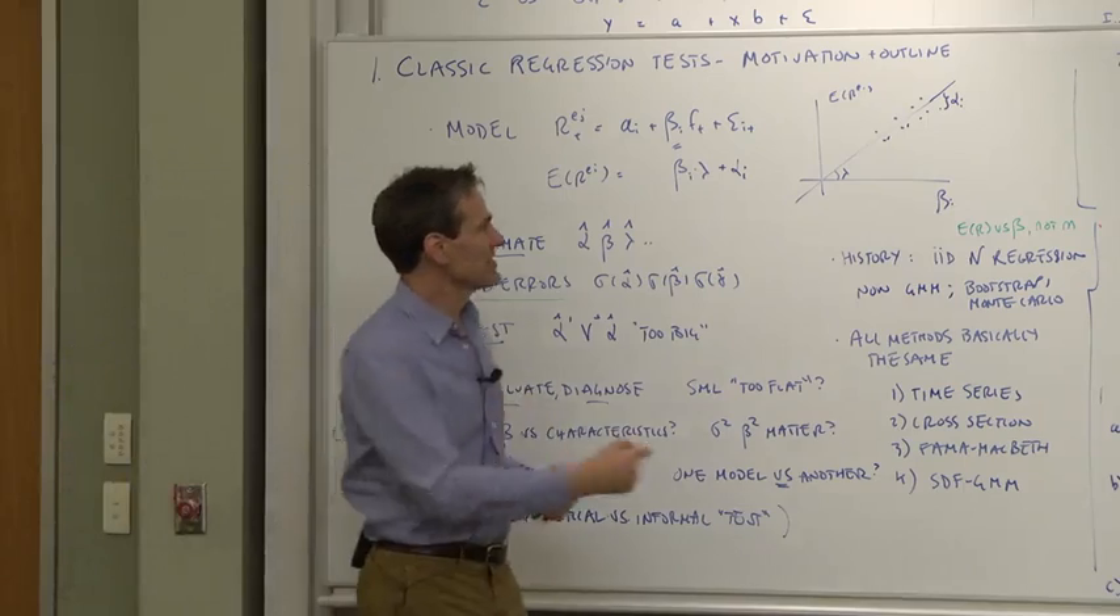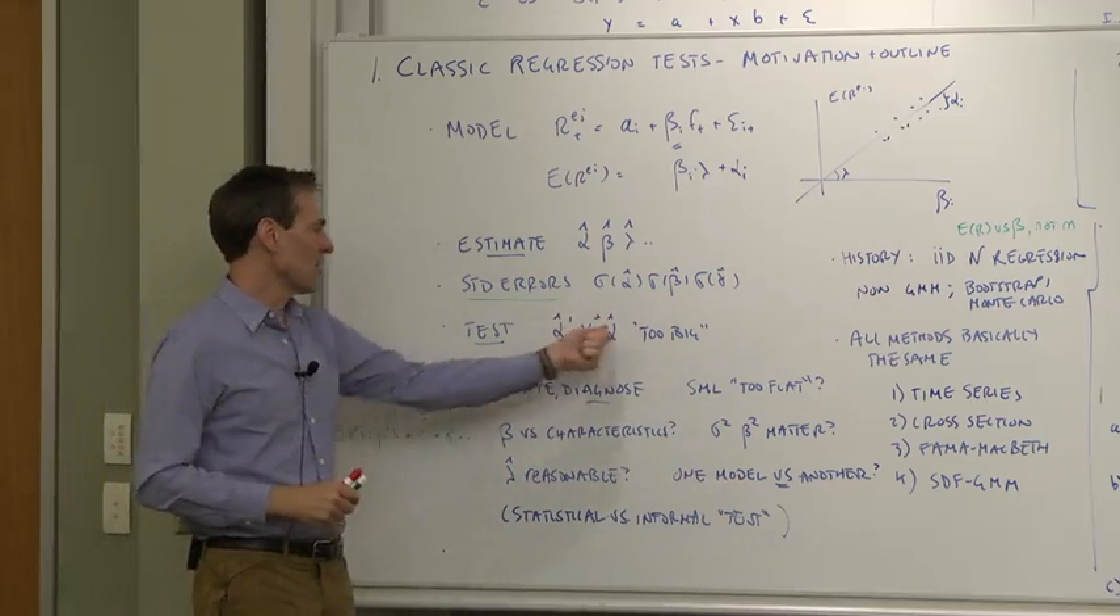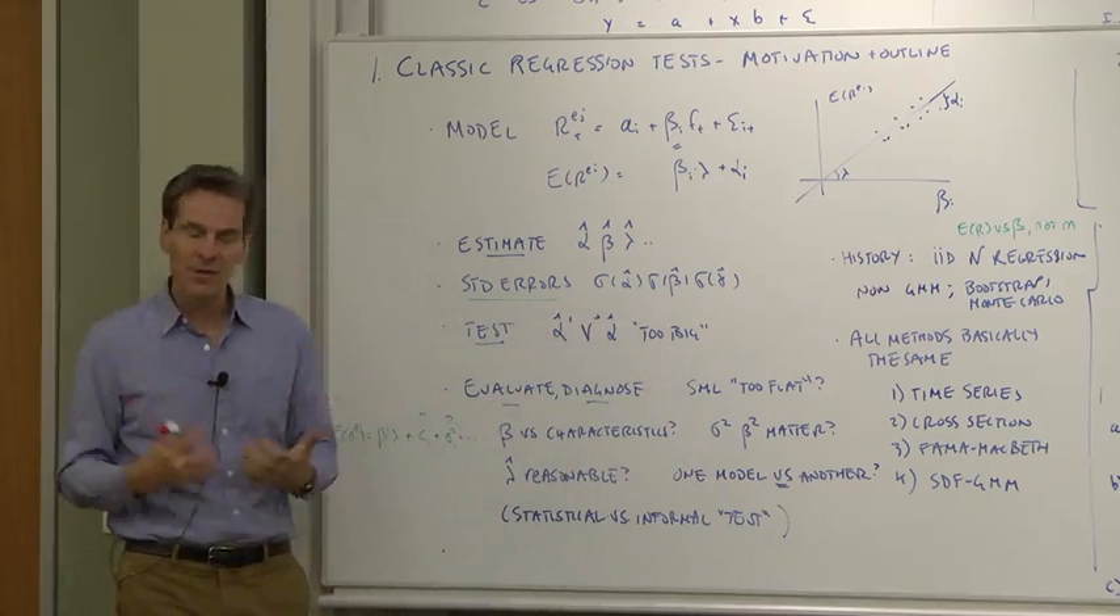And test the model's central prediction, which is the alphas should be zero. So the central test is some measure of are the alphas all together too big? It'll always be in that form, a quadratic form, some sort of sum of squares of the alphas. Is that bigger than would be the case if the true alphas were zero but we just got unlucky in this sample?